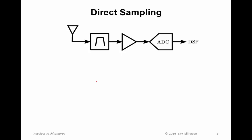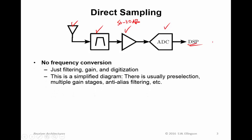First, direct sampling. Direct sampling architecture is very simple. We have an antenna, some pre-selection or selectivity, and an amplifier — that's the 50 to 110 dB of gain we typically require — and then the digitizer. The rest is done in DSP. So there's no frequency conversion, just filtering for selectivity, gain to get from a typical signal level up to a level an A-to-D can productively digitize, and then the digitization itself.